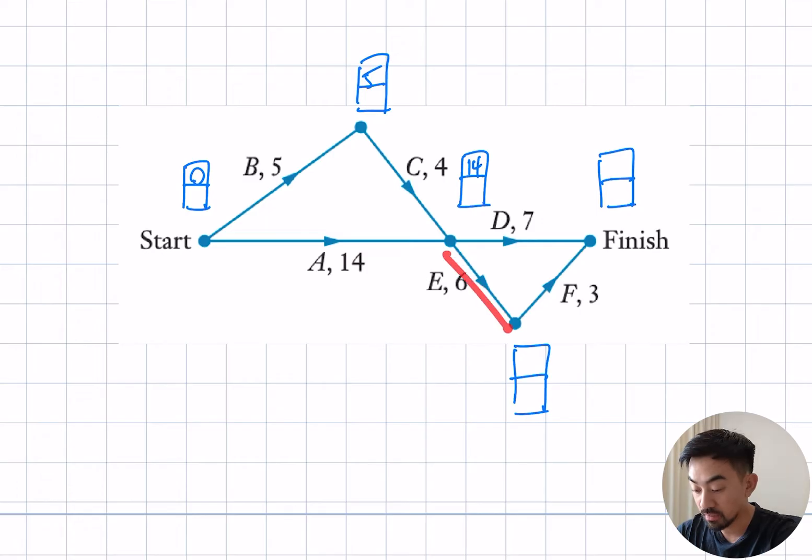Now we need to move down here. So it's going to be 14 plus 6, that's 20. Now I need to make a decision again. Is 14 plus 7 bigger than 20 plus 3? Well no, because 14 plus 7 is 21 and 20 plus 3 is 23. So that's done there. Forward scan done.